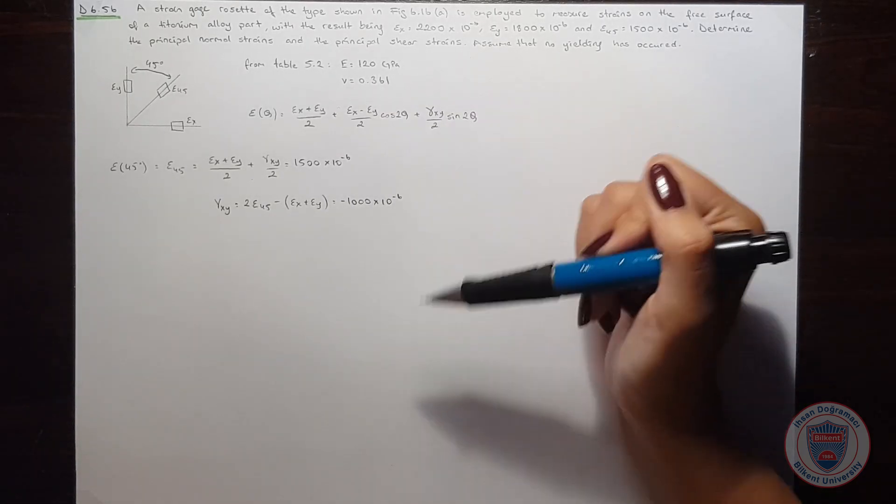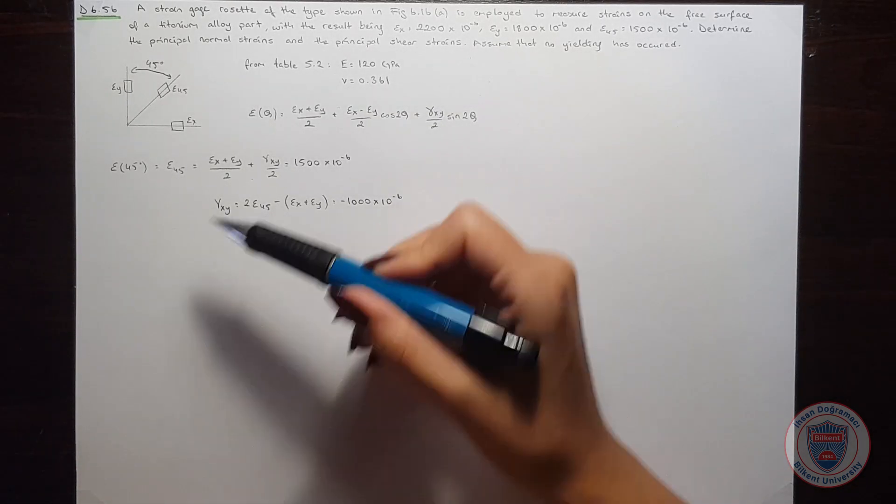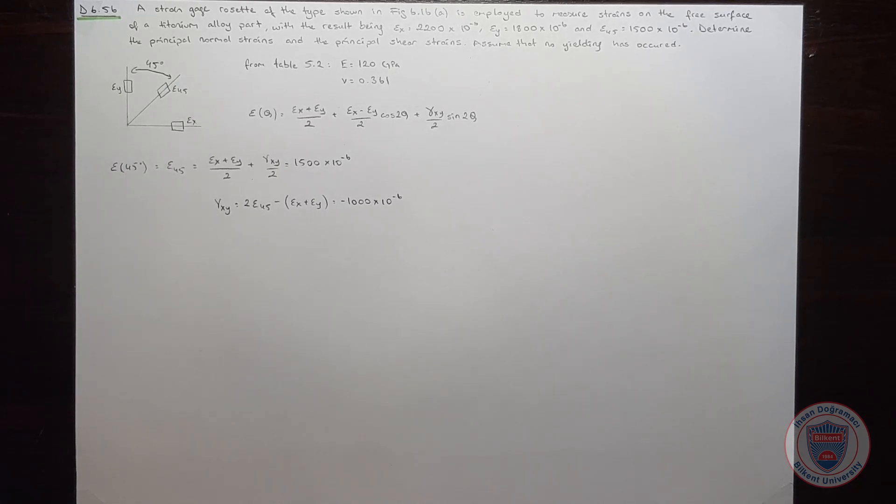Now we know epsilon x, epsilon y and also gamma xy. But epsilon z is missing, so we can calculate that too.